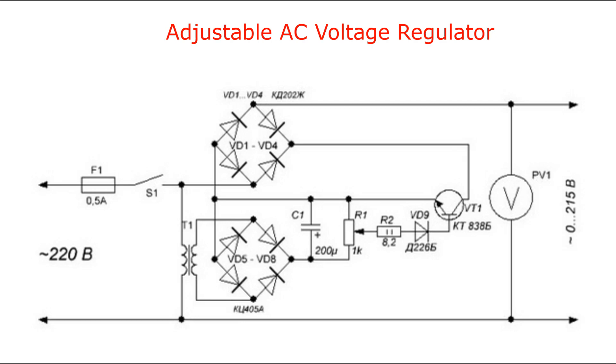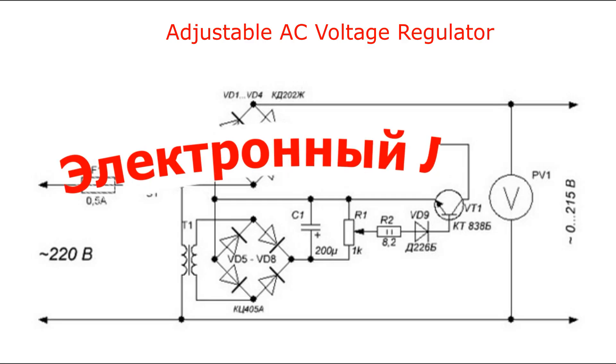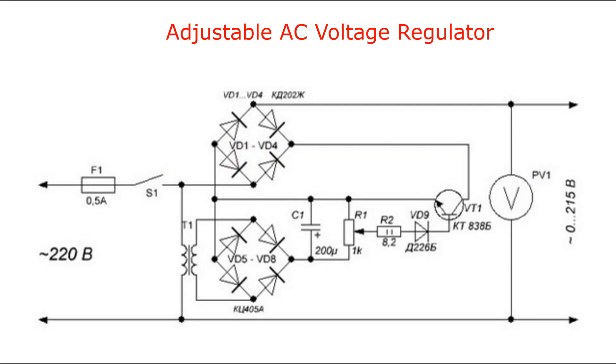Today we'll look at the circuit diagram of an adjustable AC voltage stabilizer, or in other words, it's simply an electronic later, a laboratory transformer. This voltage regulator can be used as a later as well as to regulate soldering iron power, incandescent lamp brightness, or for other purposes.